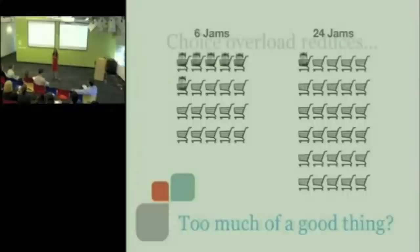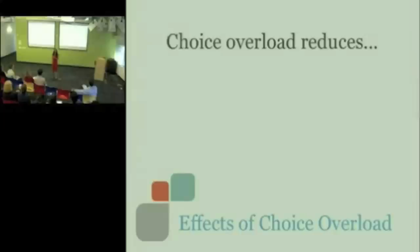Across many domains, jams to chocolates, to speed dating, to any kind of dating type choices, political choices, investment choices, healthcare choices, job search choices, lots of different domains of choice, ranging from the trivial to the consequential. And essentially, we observe three negative consequences of offering people too much choice.